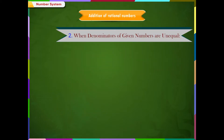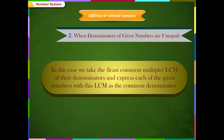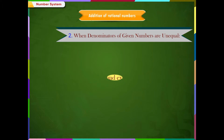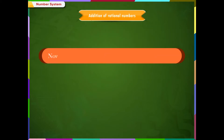Case 2: When the denominators of the given numbers are unequal. In this case, we take the least common multiple, LCM, of their denominators and express each of the given numbers with this LCM as the common denominator. Now we add these numbers as shown in the example.